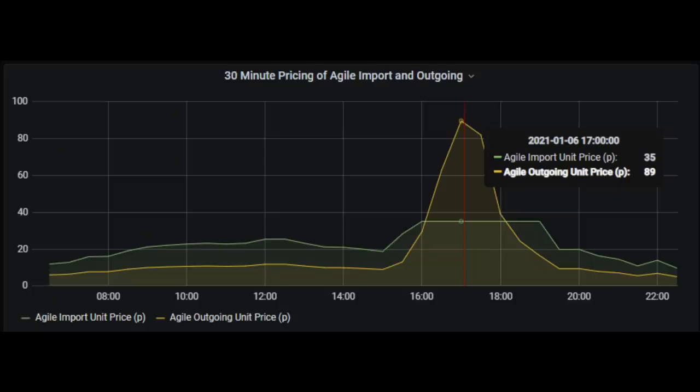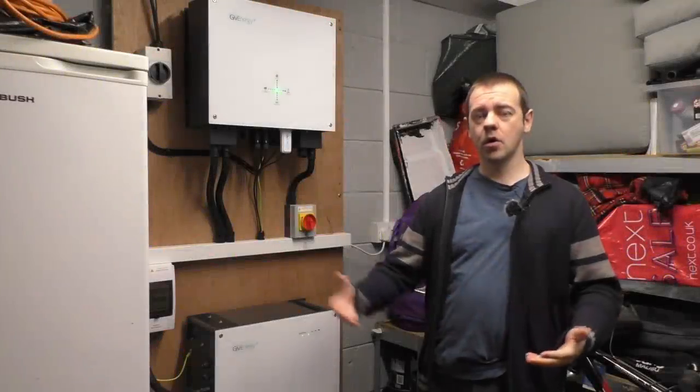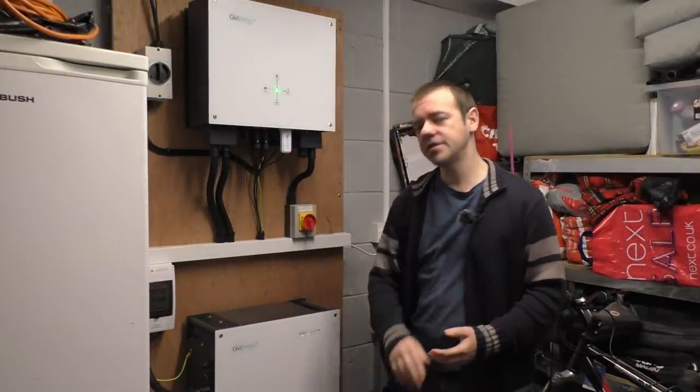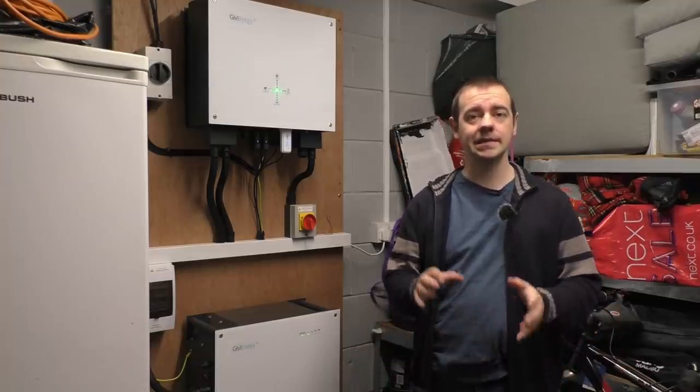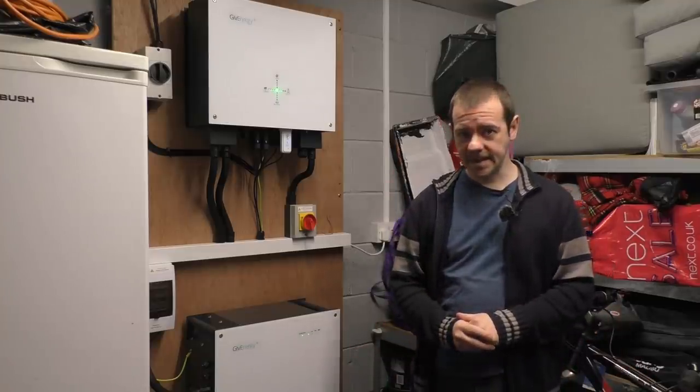On this occasion, you can see where Octopus outgoing went to 89p. So even if you're paying 13p for import, the export was more than offsetting that, which also makes winter not as bad as when you don't have any solar. It's actually a benefit sometimes when Agile goes high. Now you know what I have on my roof, you know what battery system I have, you know what Octopus Agile import and export is and can do. Let's look at the figures now.